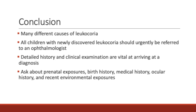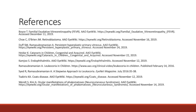To summarize, there are many different causes of leukocoria. Evaluation should be performed by the primary care physician at routine visits. Newly discovered leukocoria should warrant an urgent referral to an ophthalmologist within one week in order to exclude retinoblastoma and other life- or sight-threatening conditions. History-taking and physical examination are very important, as they can help point towards a diagnosis. History-taking should include prenatal exposures, birth history, medical history, ocular history, and recent environmental exposures. This concludes the presentation of differential diagnoses of leukocoria. Thank you for listening.